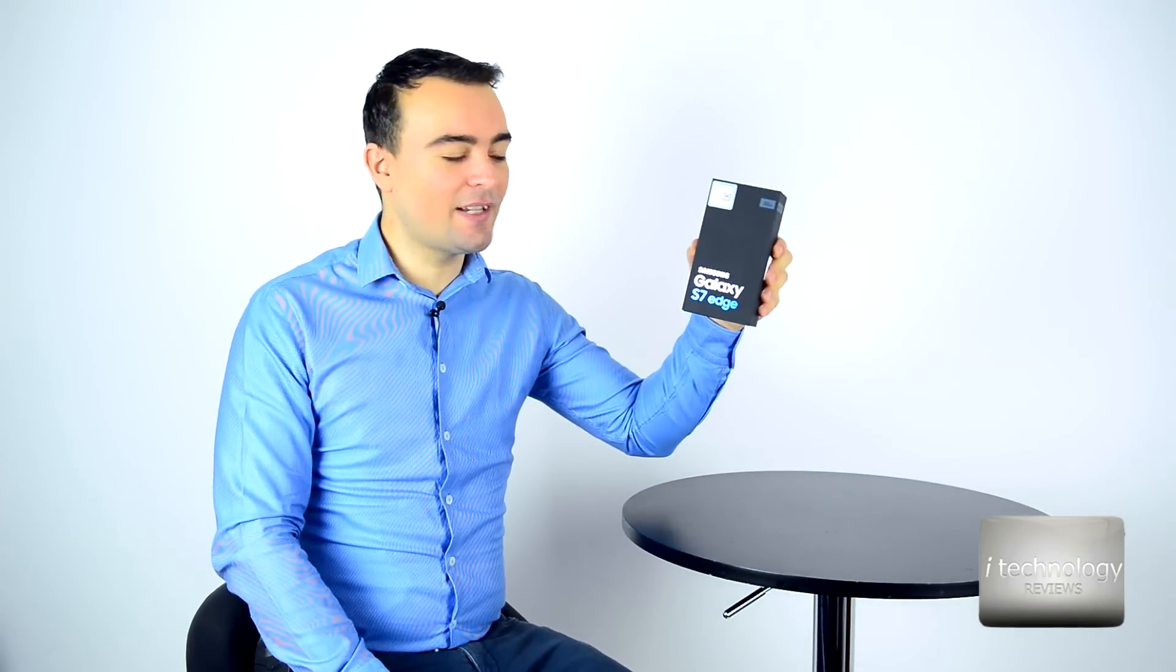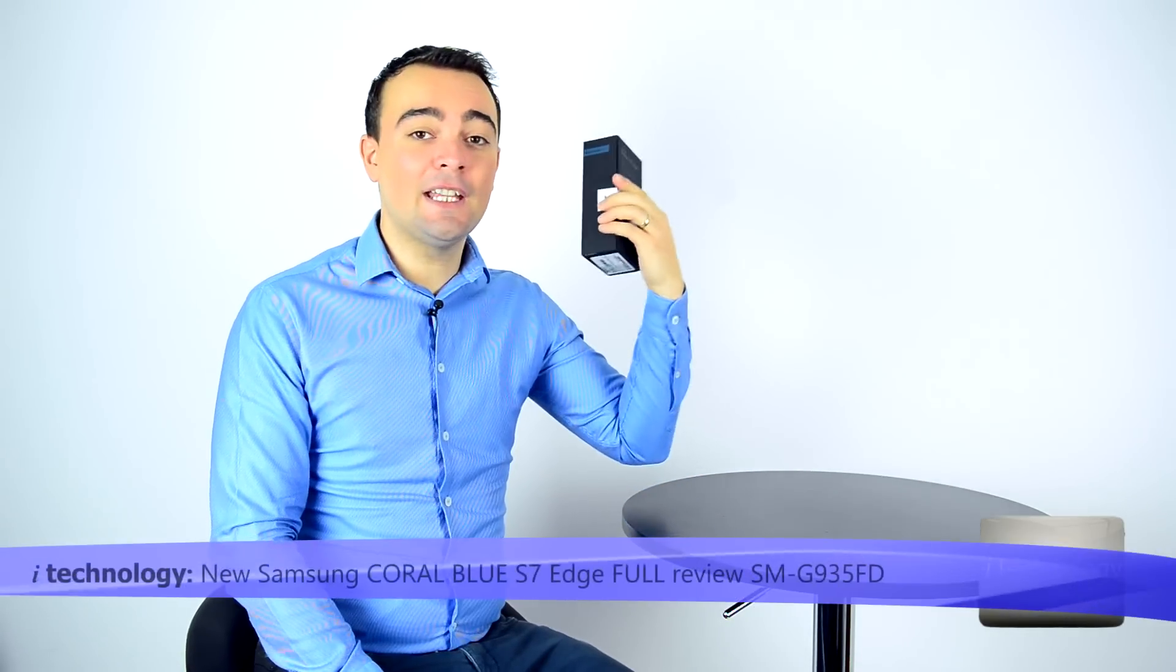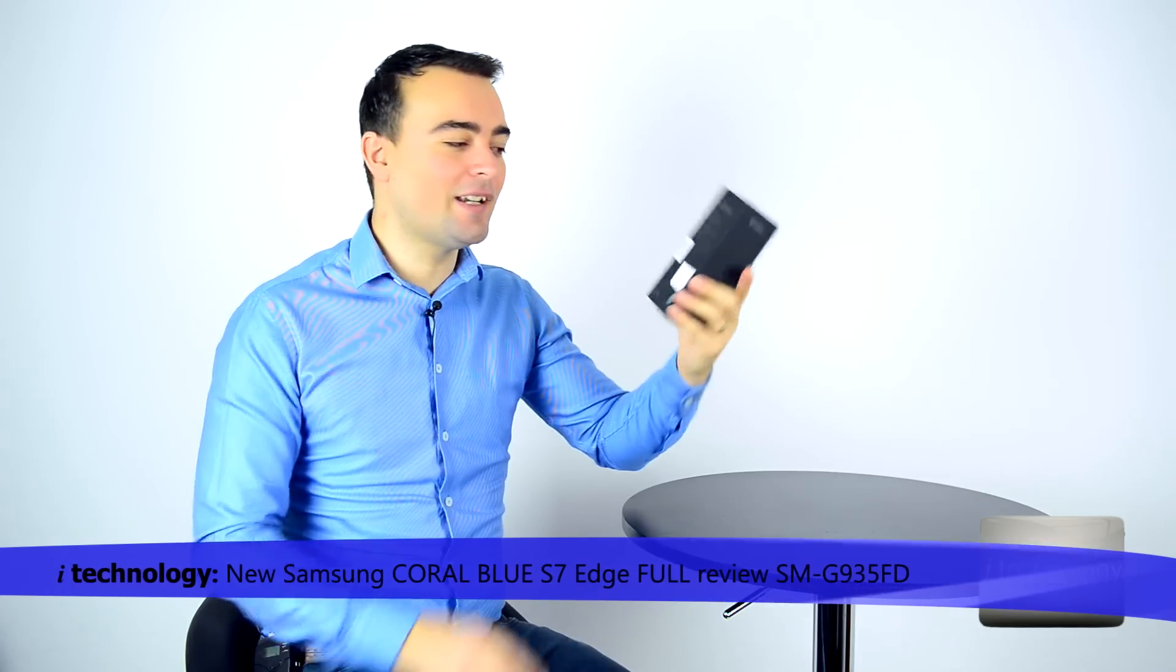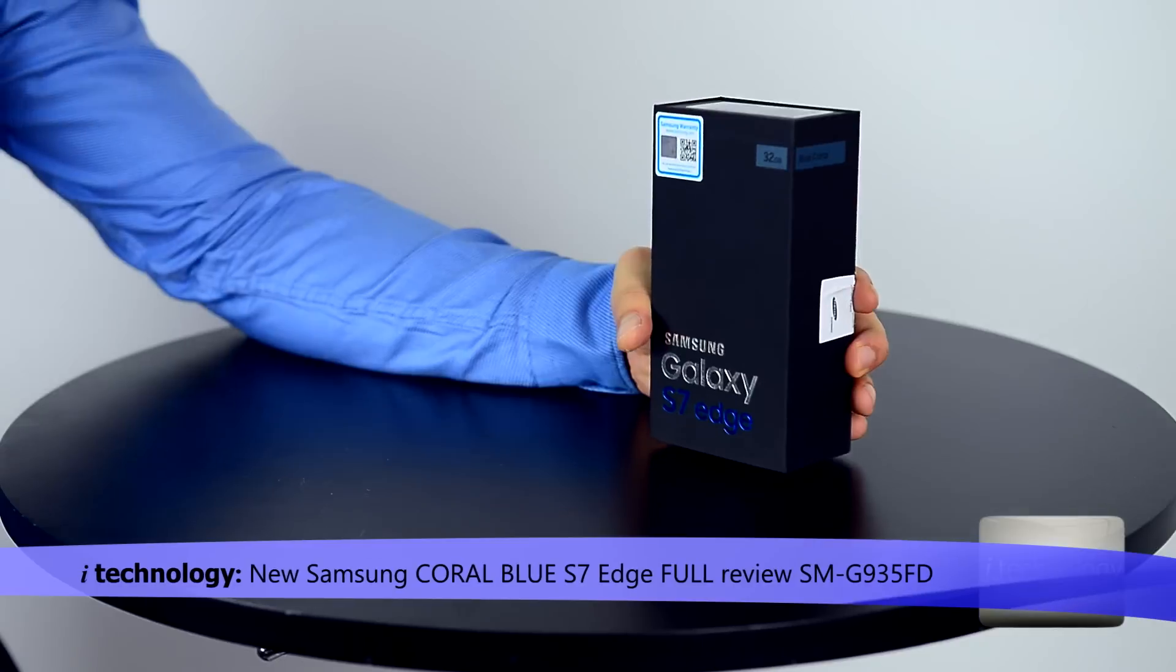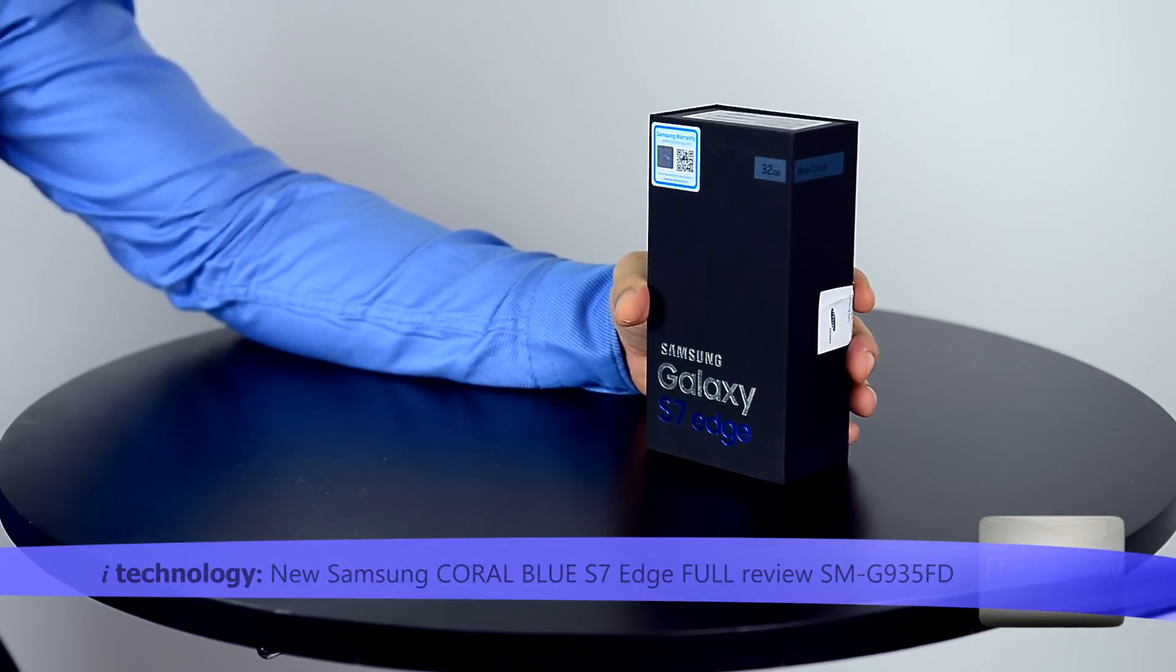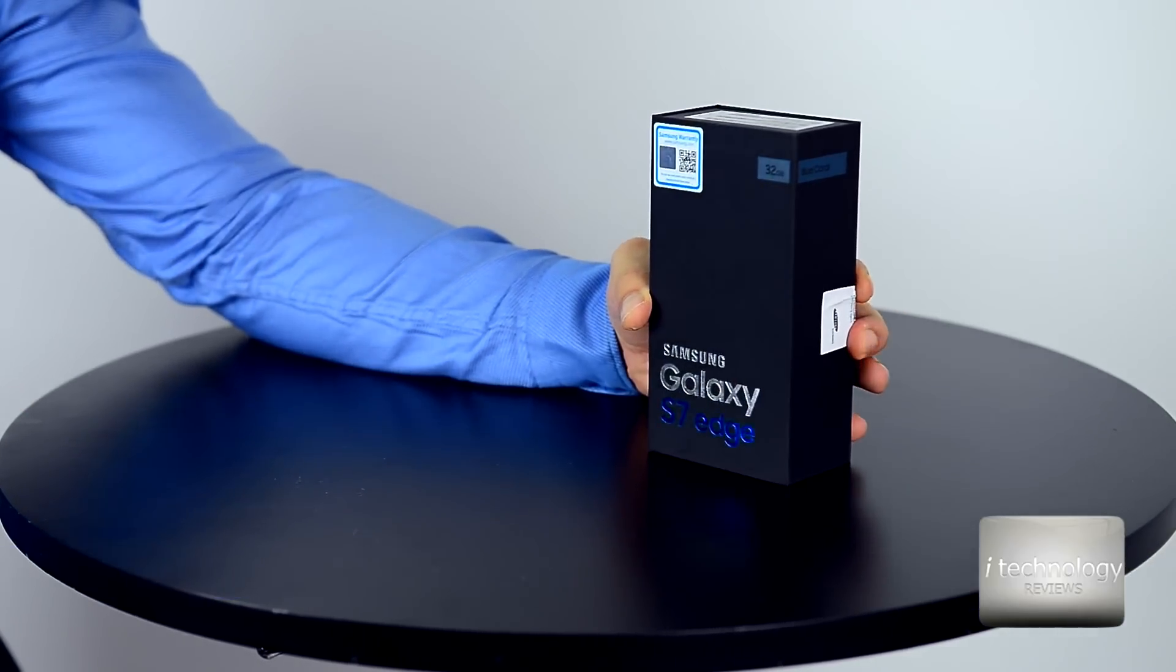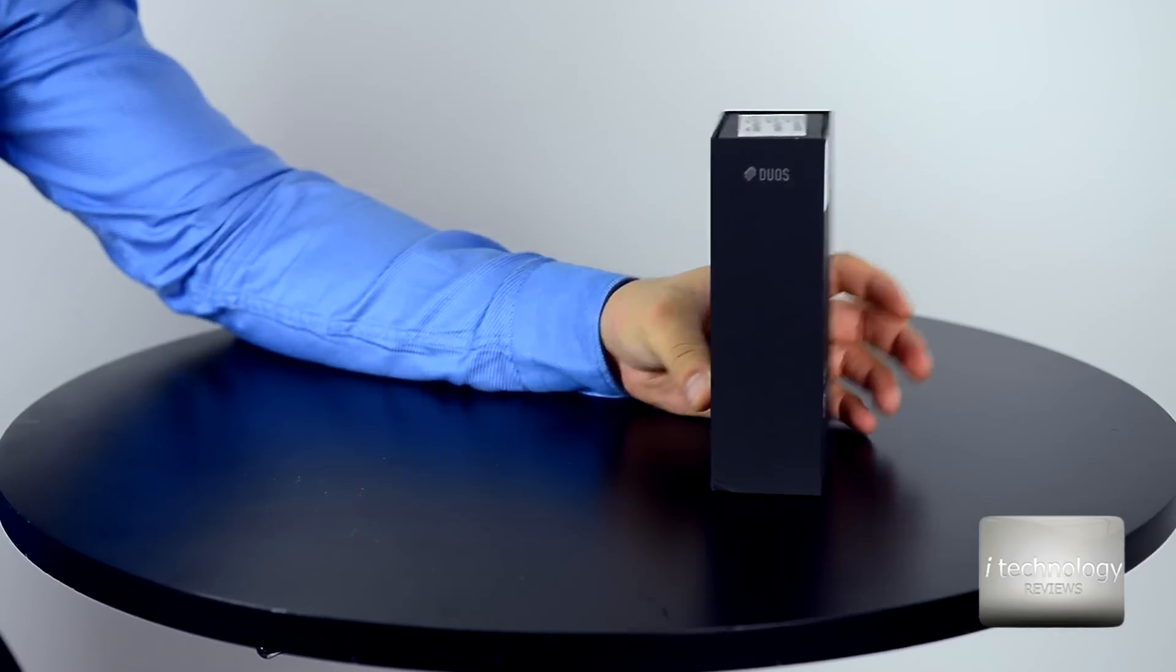This review is about the S7 Edge Coral Blue. And this phone is dual sim, so you can put your two sims on the phone. This is the model in 32 GB of ROM storage and with 4 GB of RAM. We're gonna do a review, I'm gonna tell you tips about this phone. It's a great phone. I have great expectations.